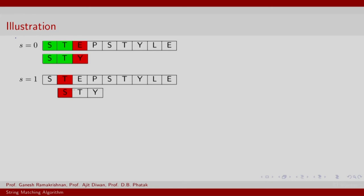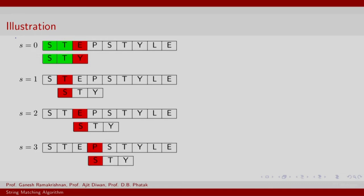You can then think of moving the pattern to the right scanning at the second character position of the string. You find a mismatch right away. Further down you again find a mismatch at E and then at P. However, at position 5 which corresponds to index 4 of the string, you find a match at all the three positions S, T and Y.